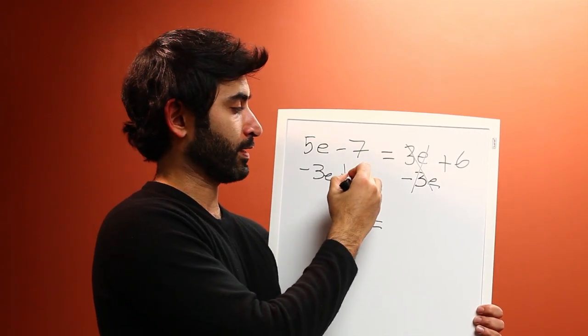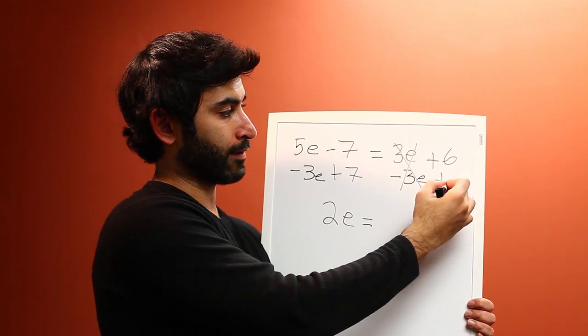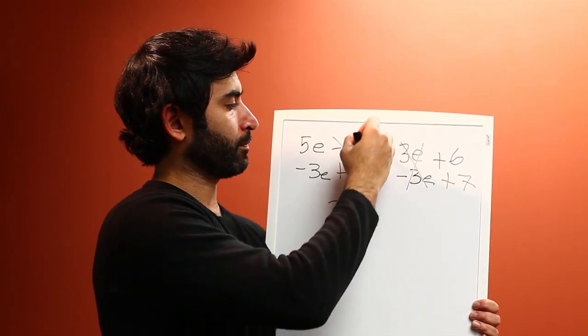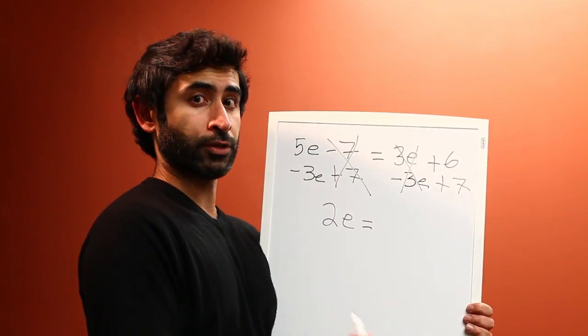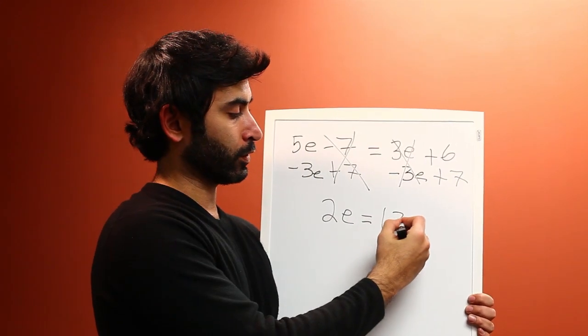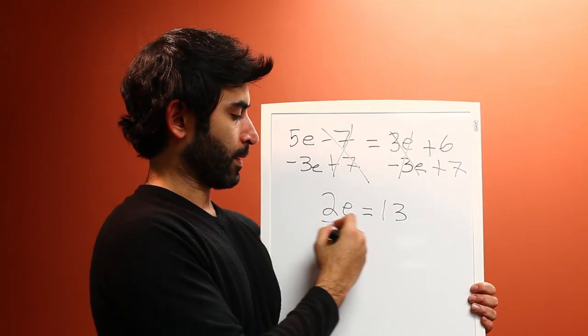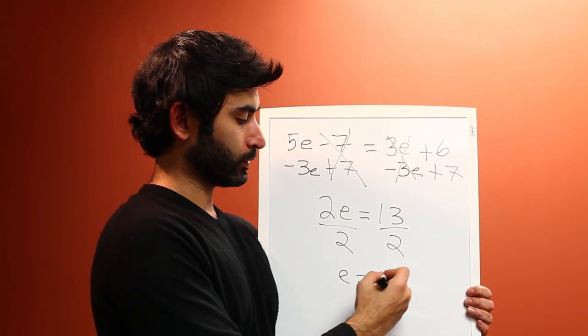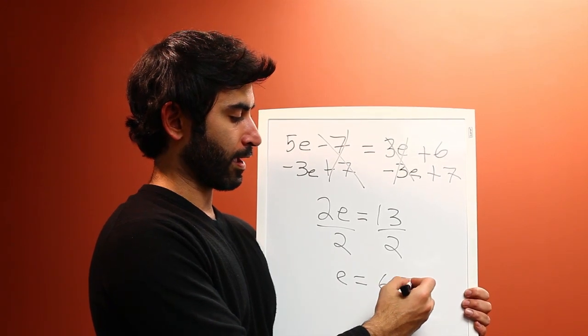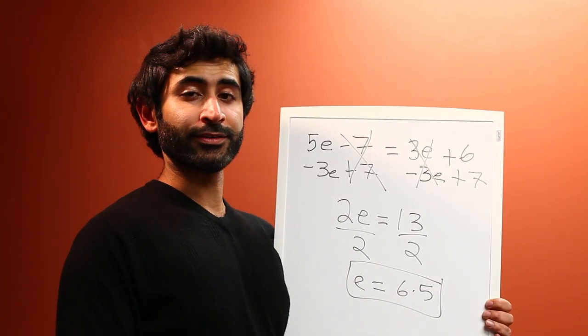so you can do plus 7 here, plus 7 here. Minus 7 plus 7 is 0, 6 plus 7 is 13. 2E equals 13. Divide by 2 both sides, E equals 6.5. And that is how you solve for E. This is Dr. Farhan Khawaja, thank you for listening.